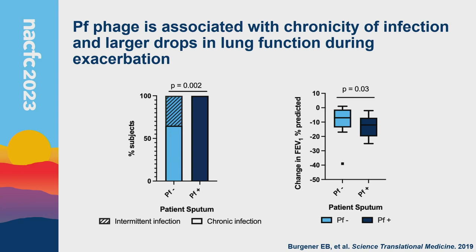In a cross-sectional cohort at Stanford, applying Leeds criteria to assess chronic Pseudomonas, 100% of PF-positive patients met criteria for chronic infection, versus only 65% of PF-negative patients — indicating an association with chronic infection. Looking at lung function during exacerbations — where baseline is the best FEV1 in the last six months — PF-positive patients had a larger drop in lung function during exacerbation, suggesting these patients became sicker.